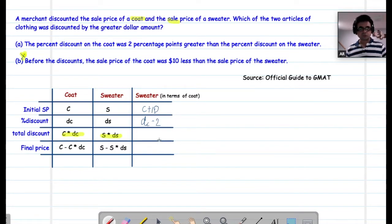Now, let's combine these two. So when we combine these two, C multiplied by DC in the coat side and for the sweater, we have C plus 10 multiplied by DC minus two. And as you can see, there is C plus 10 here. So this is a value in the product that is trying to increase the product. Here is a value in the product that is trying to decrease the product.